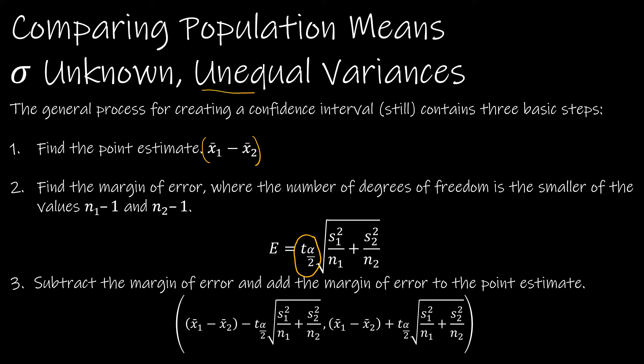When you have unequal variances, the number of degrees of freedom is the smaller of n1 minus one and n2 minus one. This is key because if you have the wrong degrees of freedom, then your whole interval is wrong. This part looks the same as what we did before when we knew sigma, except obviously that these are S's now because we don't know sigma. We know the sample standard deviation.